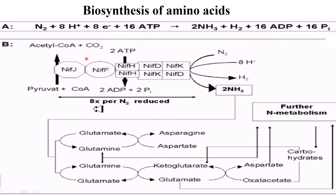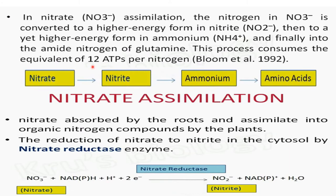This ammonia is utilized for the synthesis of amino acids such as glutamate, which is converted into glutamine. This glutamine is then either converted into aspartate or alpha-ketoglutarate, which is further converted into oxaloacetate and aspartate. Aspartate is then converted into asparagine. In this way, these amino acids are produced by utilizing the ammonium.